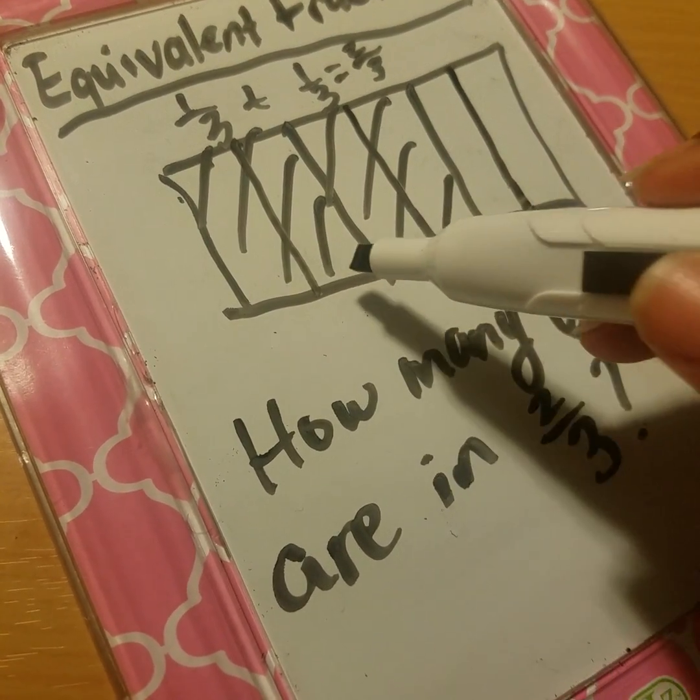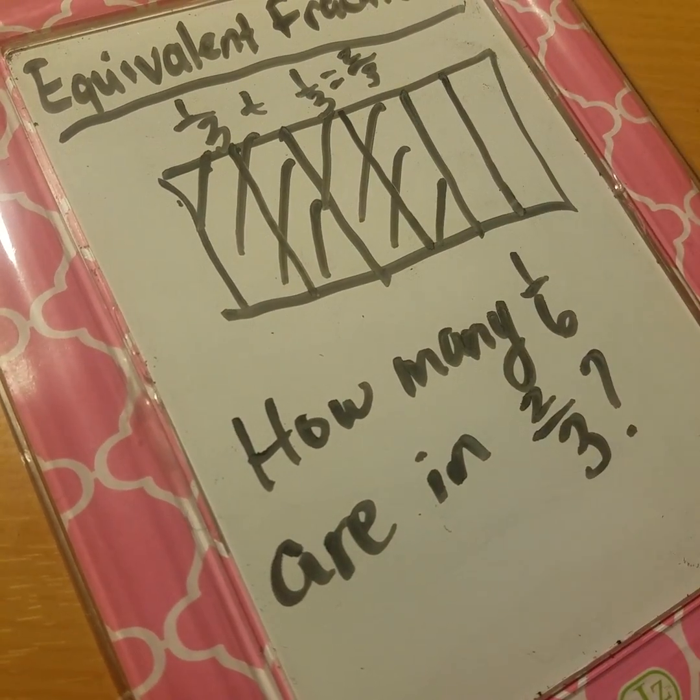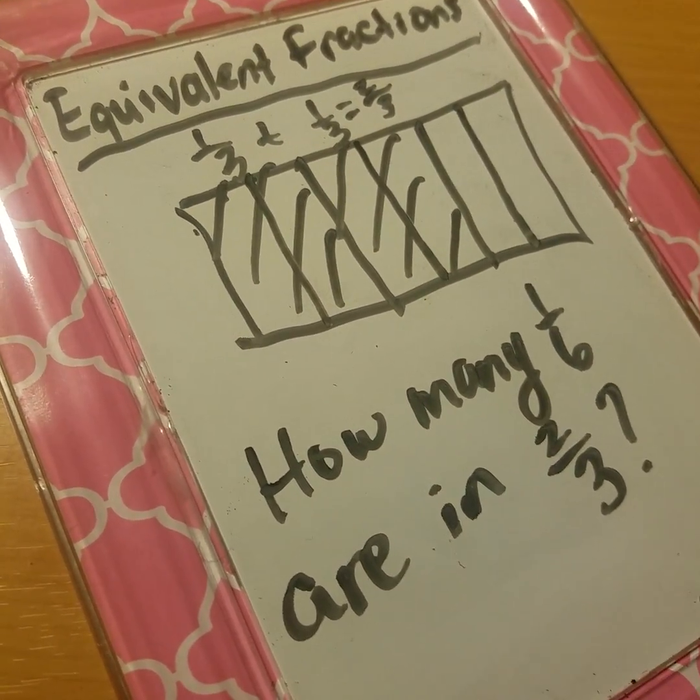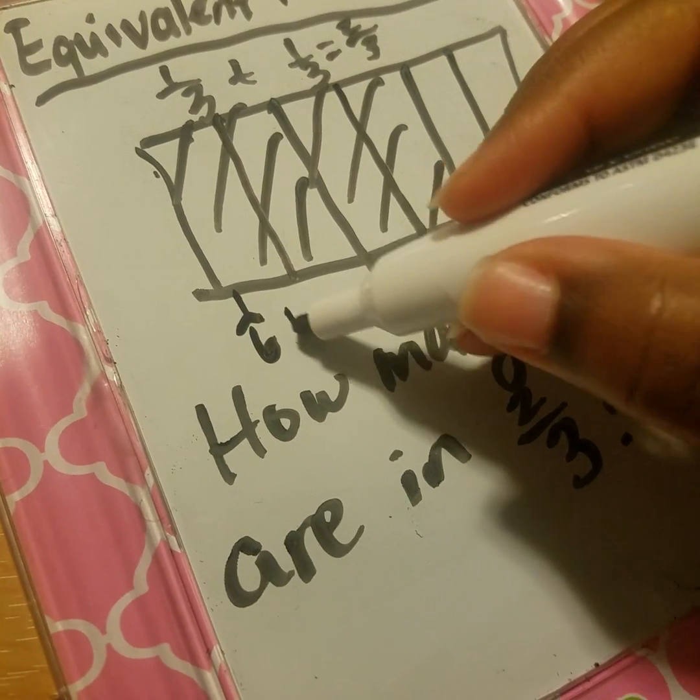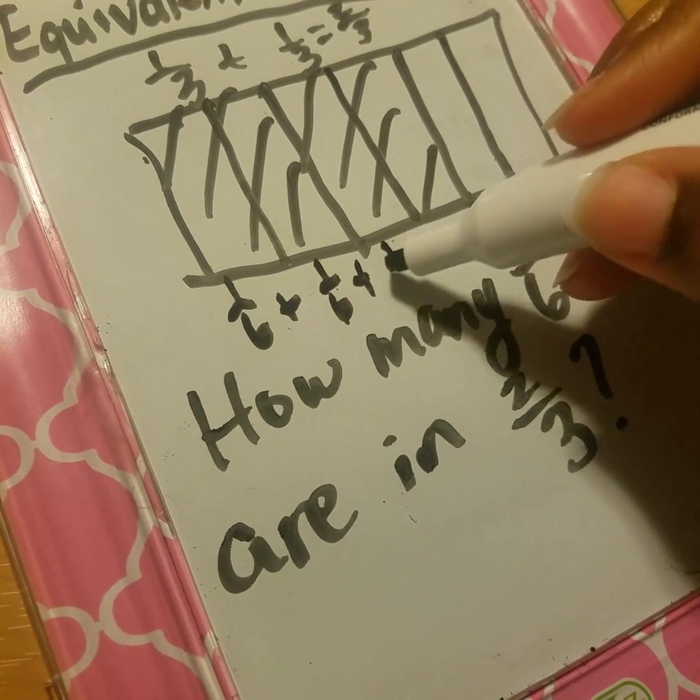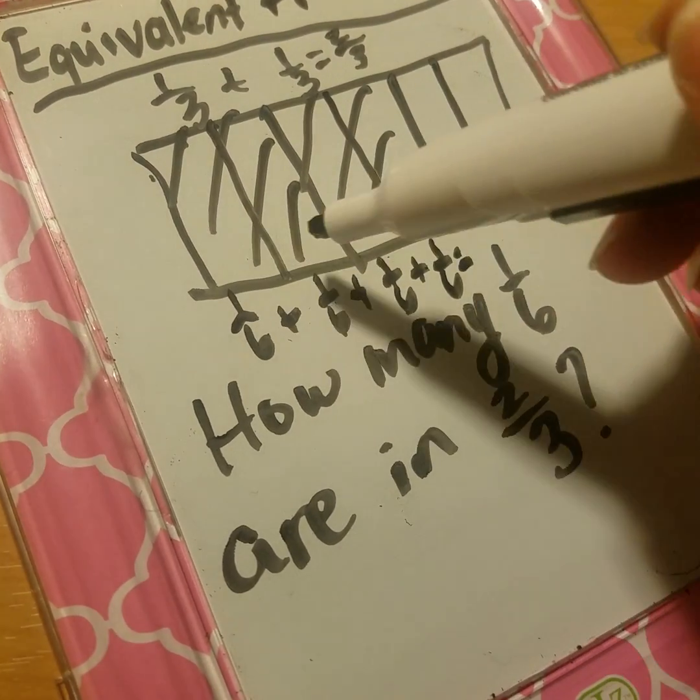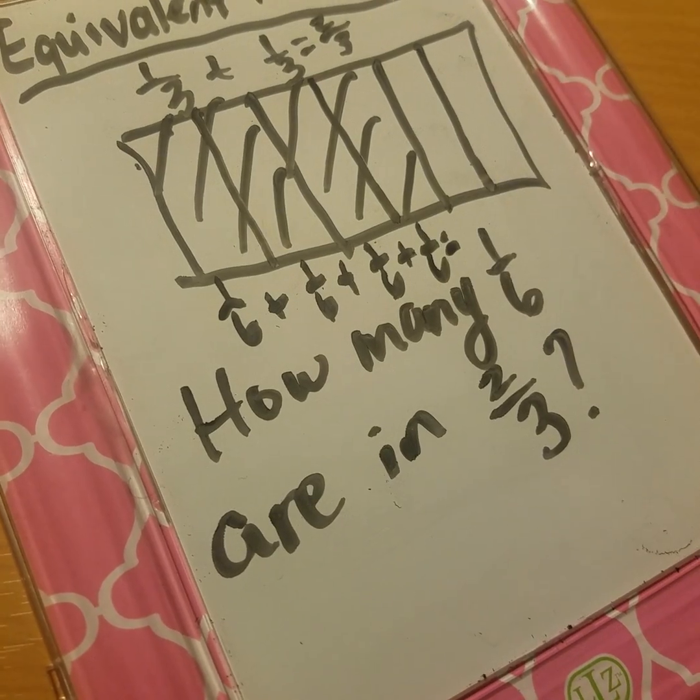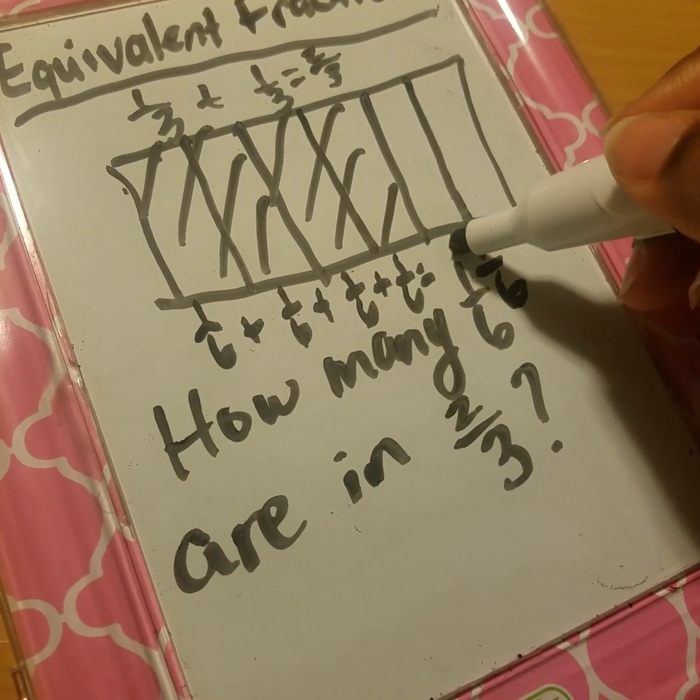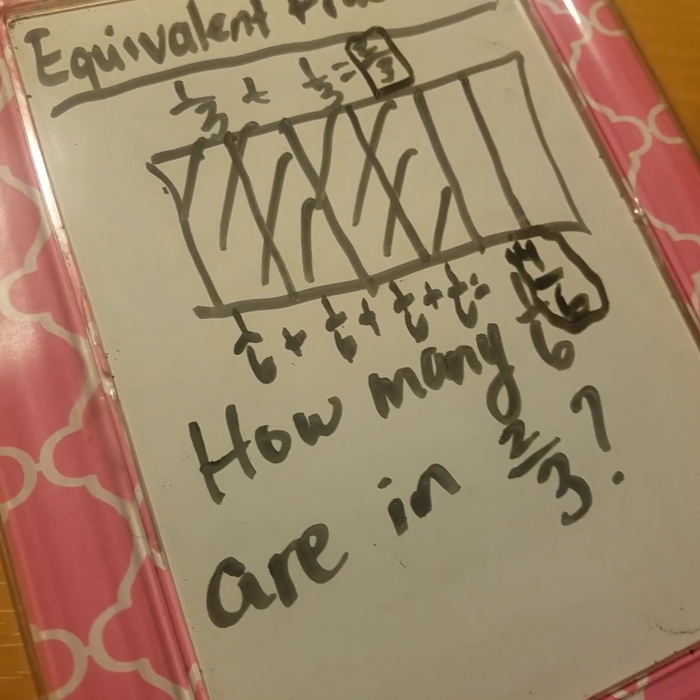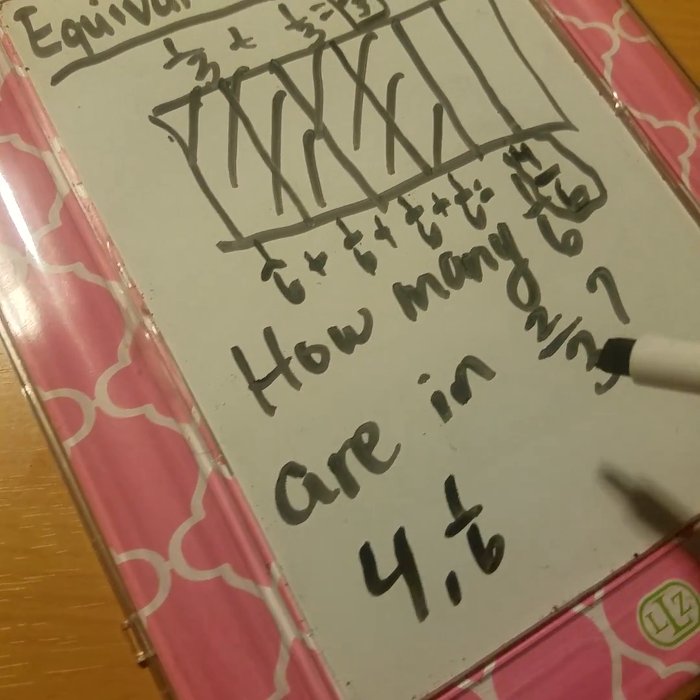Let's see how many I have now: one, two, three, four, five, six. So now our new whole is cut up into six. We're going to figure out how many one-sixths are in two-thirds. I have one-sixth plus one-sixth plus one-sixth plus one-sixth. So I have one, two, three, four one-sixth pieces, which would equal four-sixths.